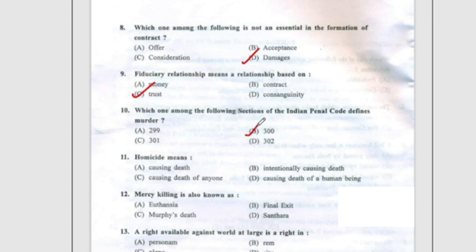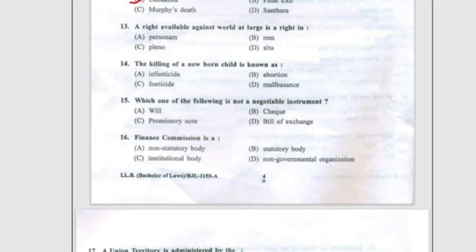Question 11: Homicide means causing death of a human being, option D. Question 12: Mercy killing is also known as euthanasia. Question 13: A right available against the world at large is a right in rem. Question 14: The killing of a newborn child is known as infanticide, option A. Question 15: Which one of the following is not a negotiable instrument? The correct answer is 'will'.